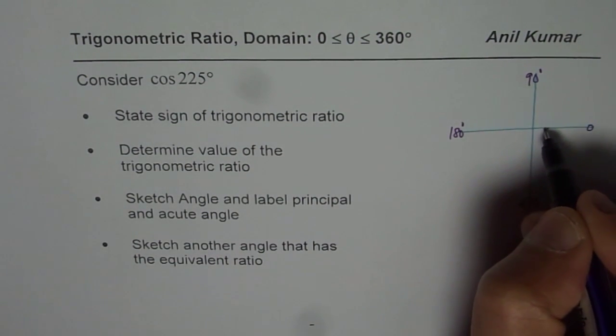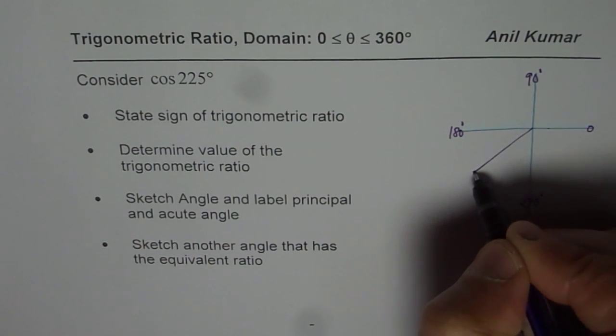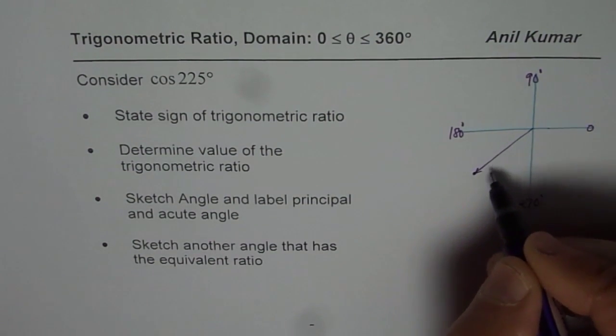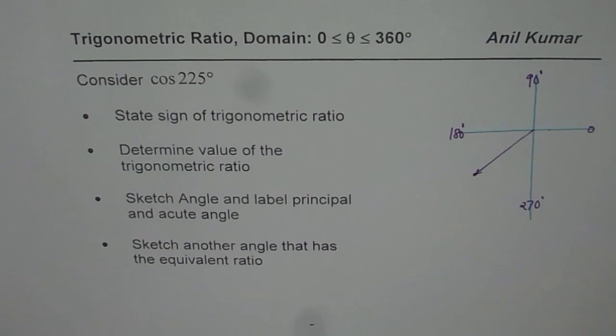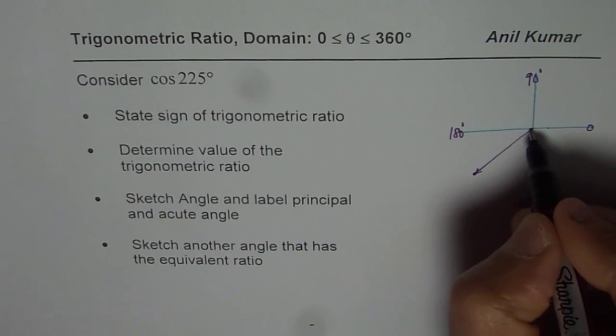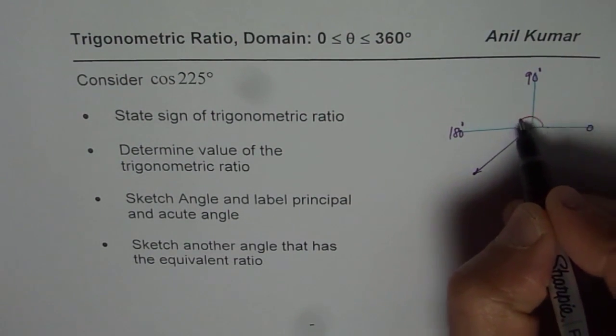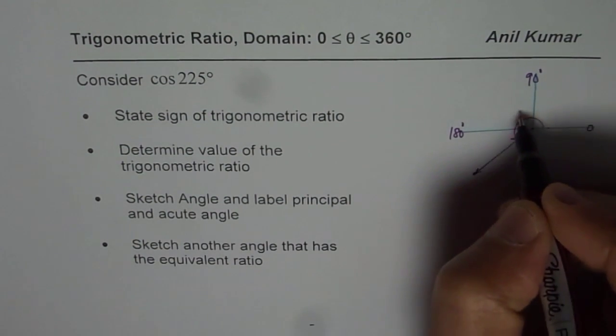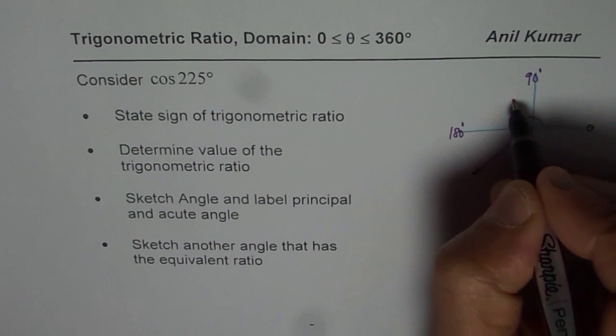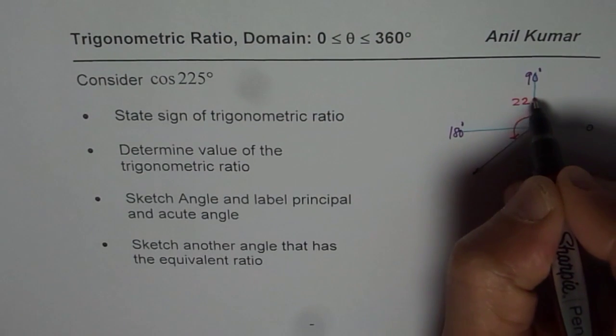So, we say the angle is kind of in this place. So, we can make an arrow here showing that this terminal arm with the initial arm makes an angle of 225 degrees. So, that angle is 225 degrees for us.